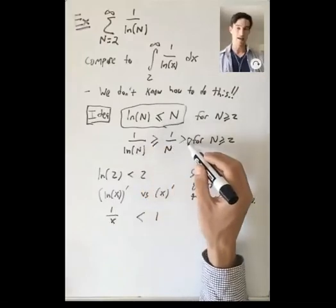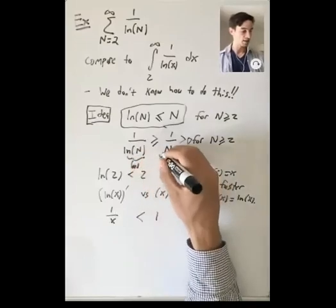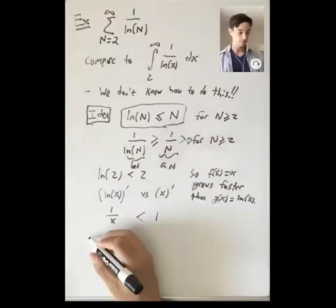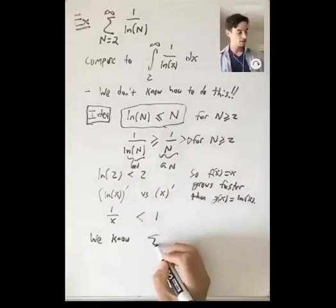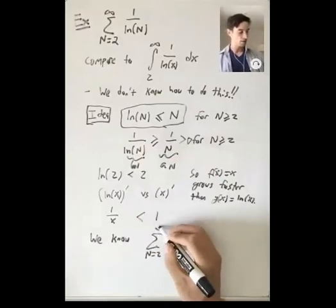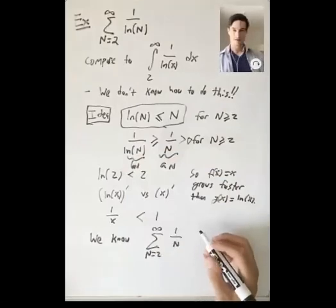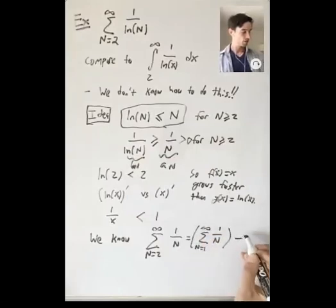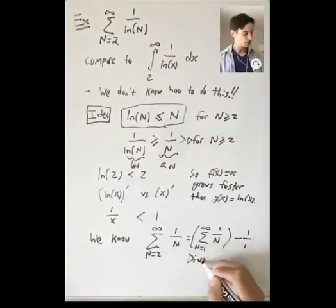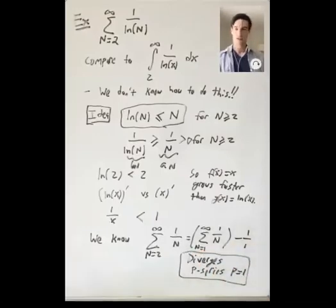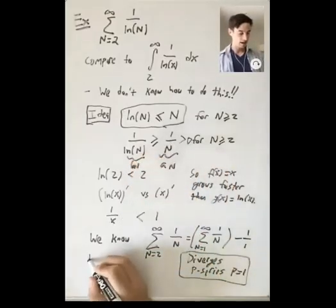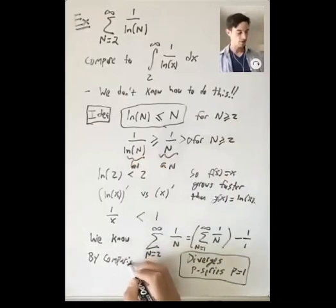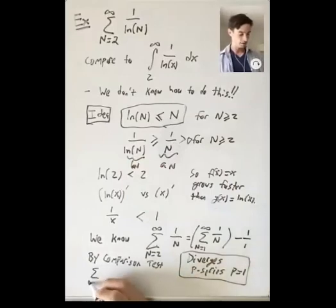So we have a bigger sequence b_n = 1/ln(n) and a smaller sequence a_n = 1/n, both greater than zero. We want to know about the b_n sum. But we know that the sum from n=2 to infinity of 1/n equals the sum from n=1 to infinity of 1/n minus the first term 1/1, and this diverges because it's a p-series with p = 1. So by the comparison test, since the sum of the smaller a_n's diverges, the a_n sum diverges.